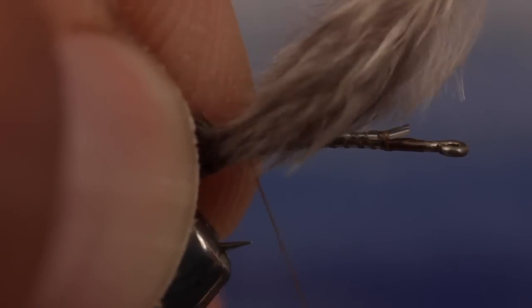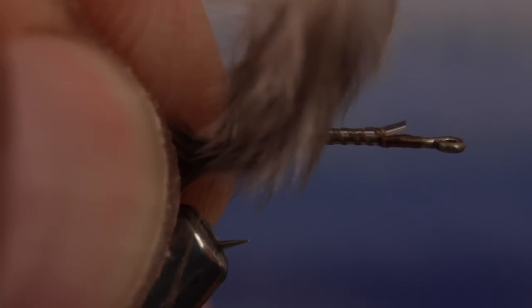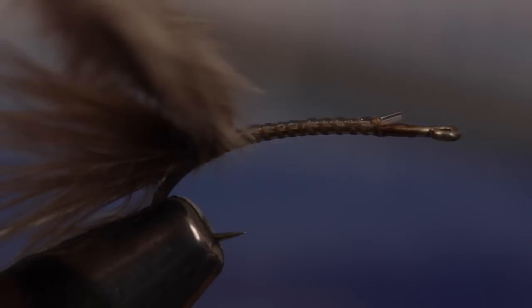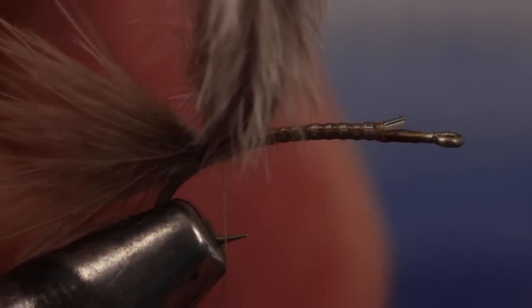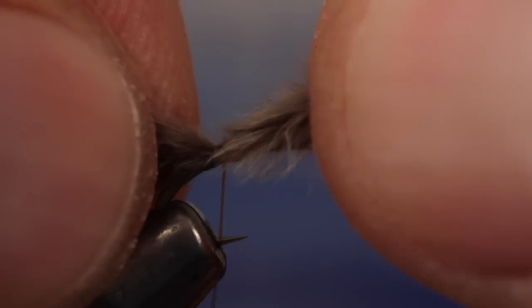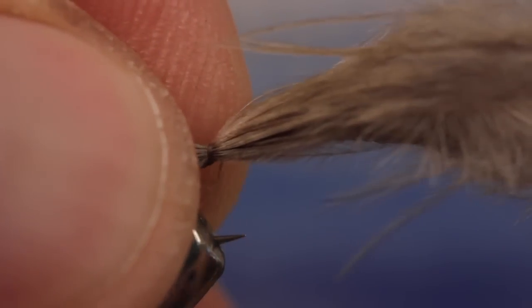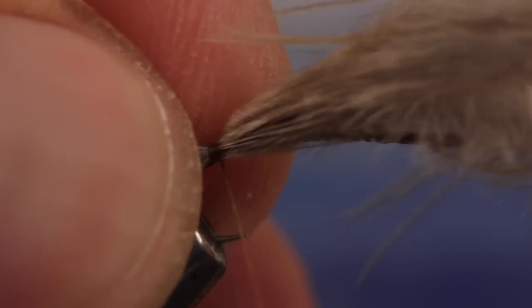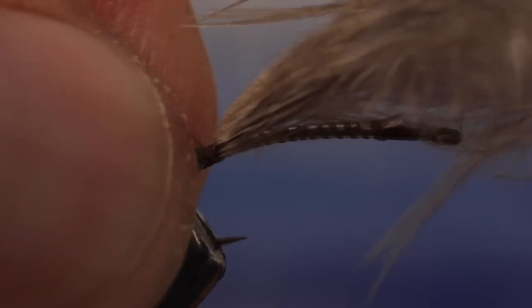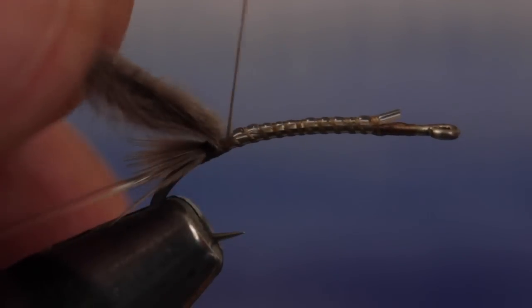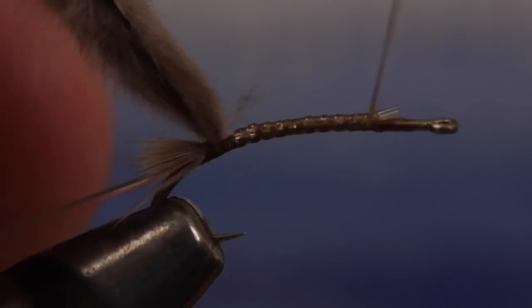Place the feather on top of the hook shank at the tying point and take a single wrap around it. Pull the base of the feather back and take a single wrap just around the hook shank. Now carefully pull the Chickaboo through the wraps to leave a very short little tail. Take a few thread wraps to secure the feather, then pull the butt end back and take wraps forward to about the three-quarter point on the hook shank.